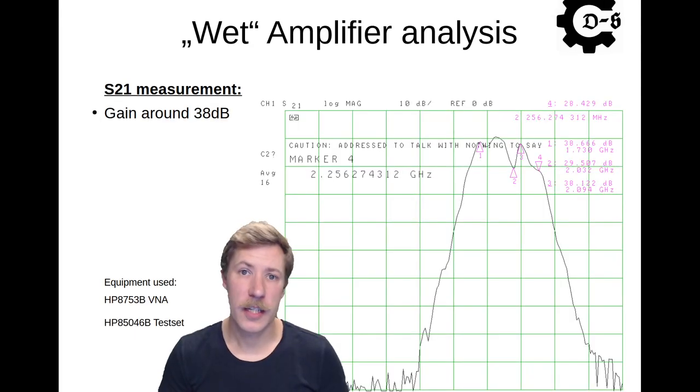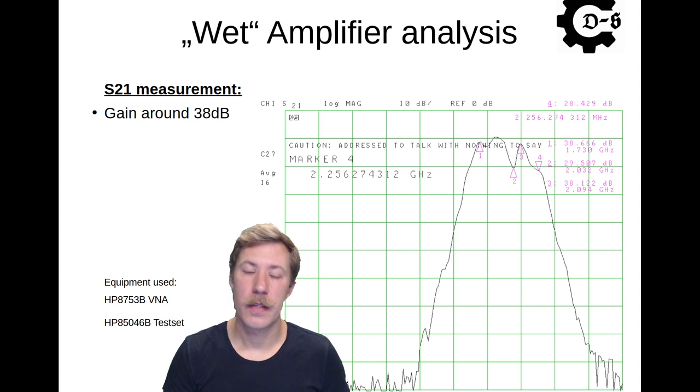From the S21 power gain measurements on the amplifier, it has roughly a 38 dB gain overall. As we can see on the markers here, at marker one we have 38 dB at 1.7 gigahertz and going up to marker four we have 28 dB amplification at 2.2 gigahertz. So this is the bandwidth of 500 megahertz of the amplifier where it has an average amplification of 30 to 35 dB.